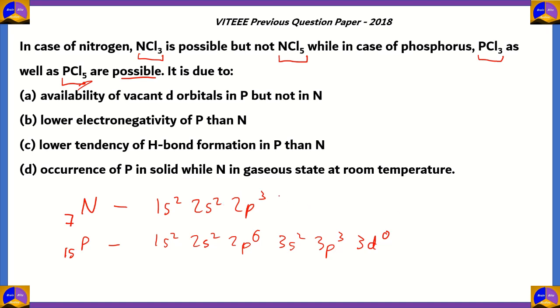In nitrogen's case, it only has until the second shell, and the d orbital begins from the third shell. Therefore, availability of vacant d orbitals in P but not in N will be the correct answer. Without the vacant d orbital, you cannot form